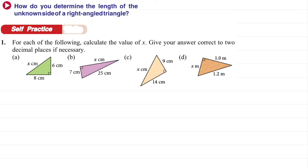Now we want to find the unknown side of a right angle triangle with given values. For each of the following, calculate the value of X. Give your answer correct to two decimal places if necessary. For A: the hypotenuse is X, so we want to find the hypotenuse. We use the Pythagorean theorem formula: AC squared equals AB squared plus BC squared.